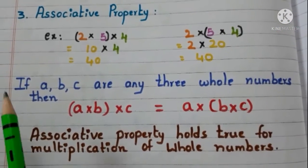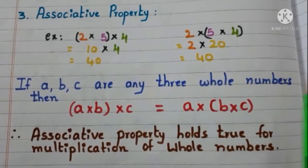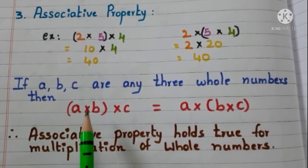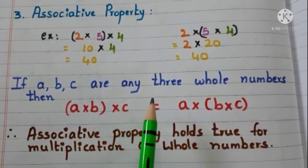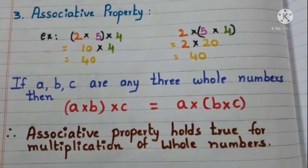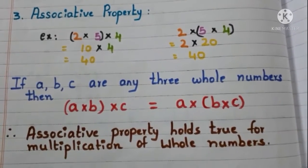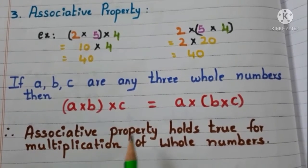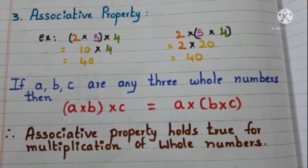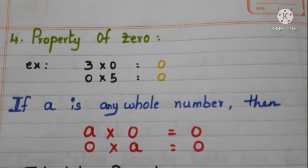Let us say, if A, B, C are any 3 whole numbers, then A into (B into C) is equal to (A into B) into C. Therefore, we can conclude that associative property holds true for multiplication of whole numbers.